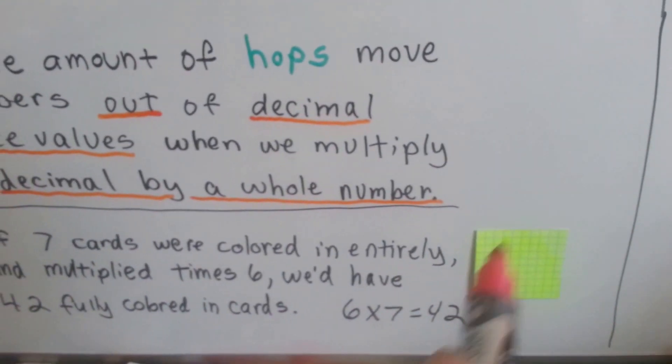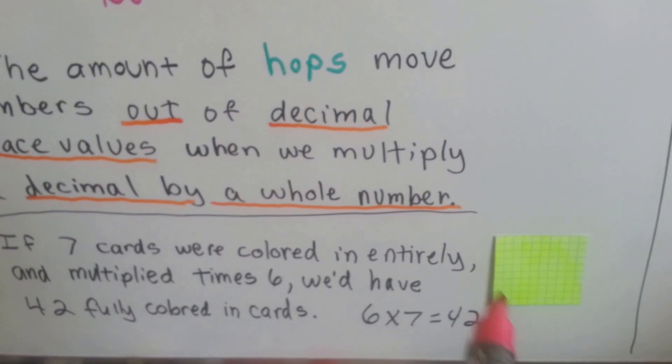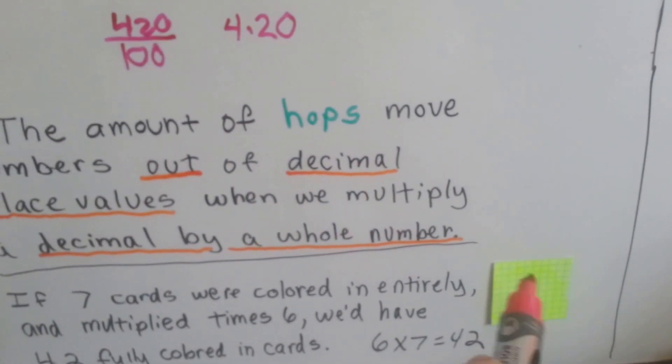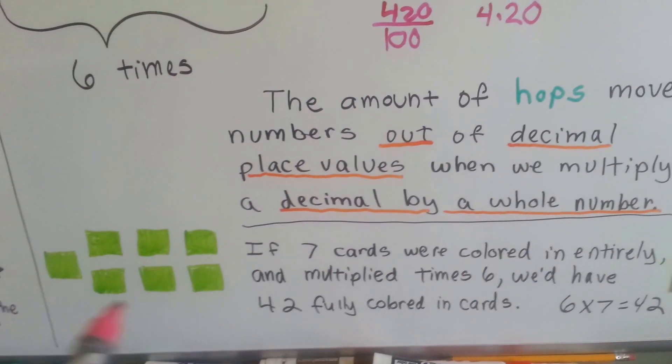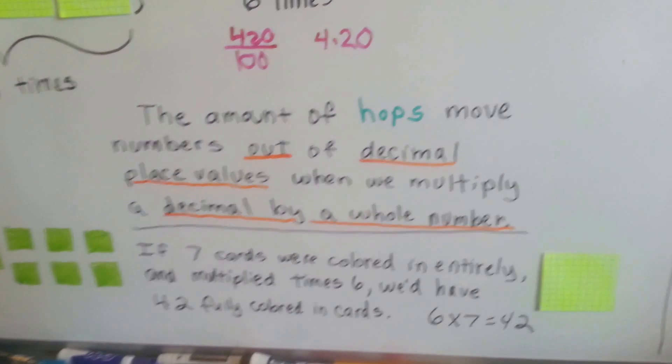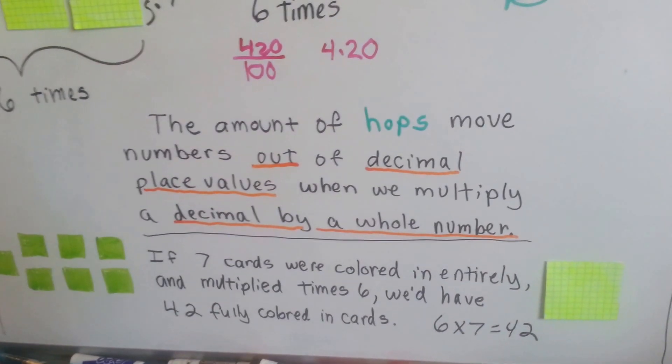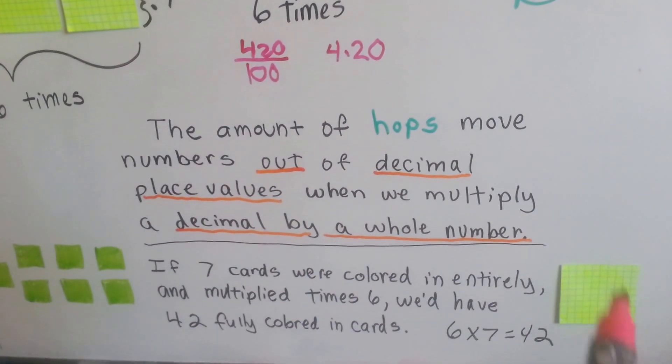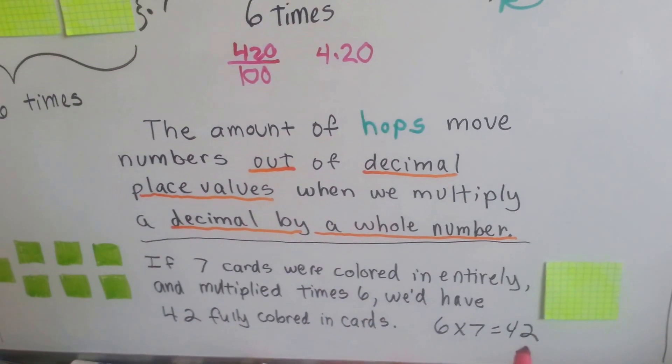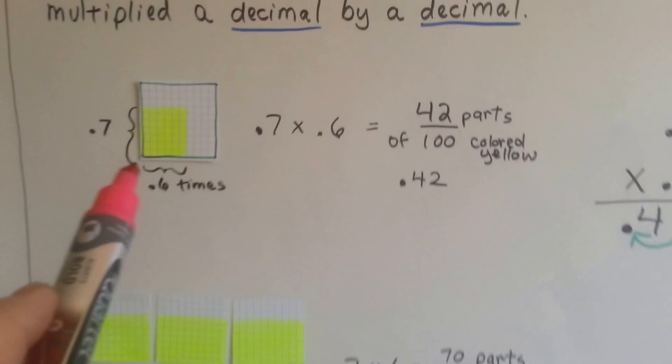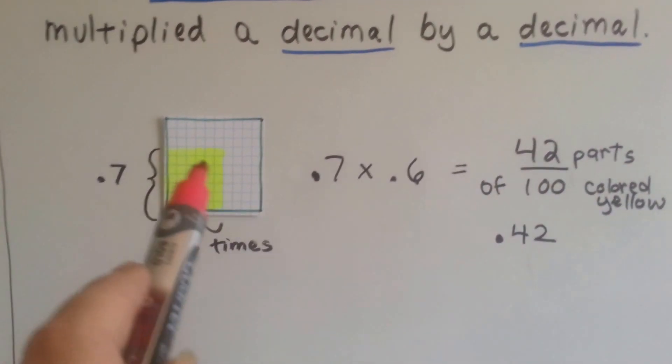If we filled the cards in completely like this, so it was one entire card filled in, and we did seven of these cards, seven ones, and then we multiplied this by six, we would have 42 full cards colored in like this. I didn't have enough cards to do it. I didn't have enough room on my board to tape them up, but we would have 42 cards that were completely filled in like this if there was no decimal point. By putting one decimal point in, we end up with this. By having two decimal points in our equation, we end up this small. See?